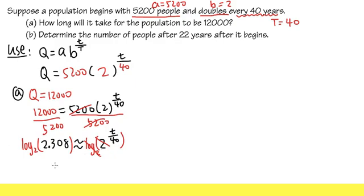So that means t divided by 40 is approximately... For this, how do we calculate that? Remember, you do it on the calculator as log of this number, 2.308, and then divide it by log of the base, which is 2. So this is how you calculate this number. Let me just do that on the calculator. We have log of 2.308, and then divide it by log of 2. This ends up with approximately 1.207.